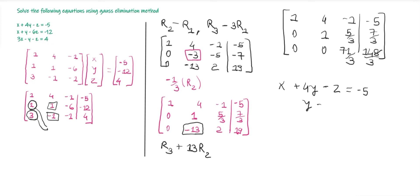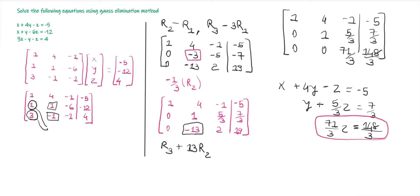We write the equations from this matrix. From row 1: X + 4Y − Z = −5. From row 2: Y + (5/3)Z = 7/3. From row 3: (71/3)Z = 148/3. Now we use back substitution. From the third equation, Z = 148/71 (the 3s cancel). Substituting into the second equation: Y + (5/3)·(148/71) = 7/3.